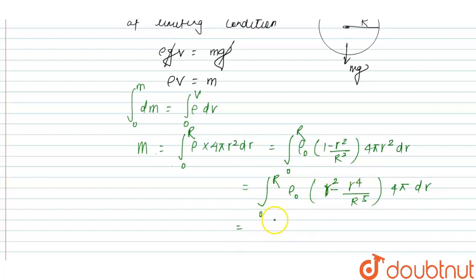The integration of r² is r³/3 minus r⁵/(5R⁵), with limits 0 to R. This is the value of m.